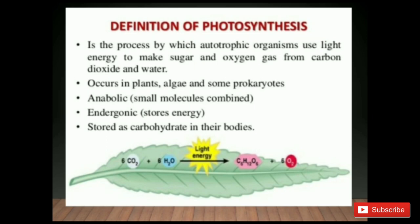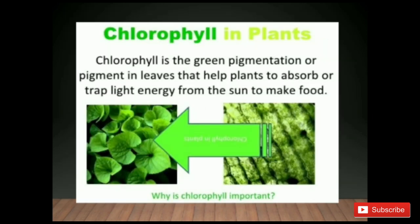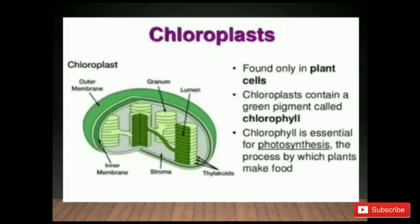Chlorophyll is the green pigment in leaves that helps plants to absorb or trap light energy from the sun to make food. Chloroplasts in plant cells contain a green pigment called chlorophyll, and chlorophyll is essential for photosynthesis — the process by which plants make food.